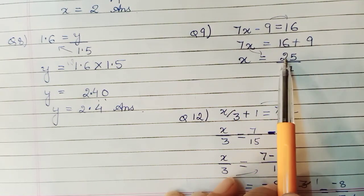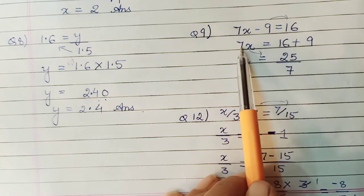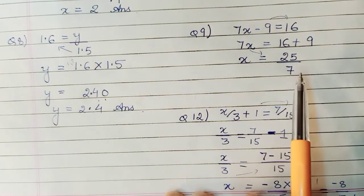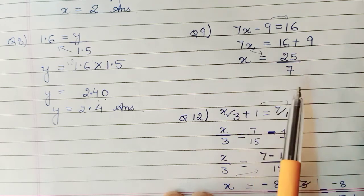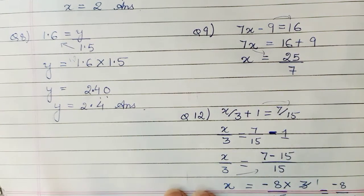So 16 plus 9 becomes 25. And this 7 was multiplying here, was in numerator. So it will divide here, will go to denominator. So our x will come out to be 25 upon 7.